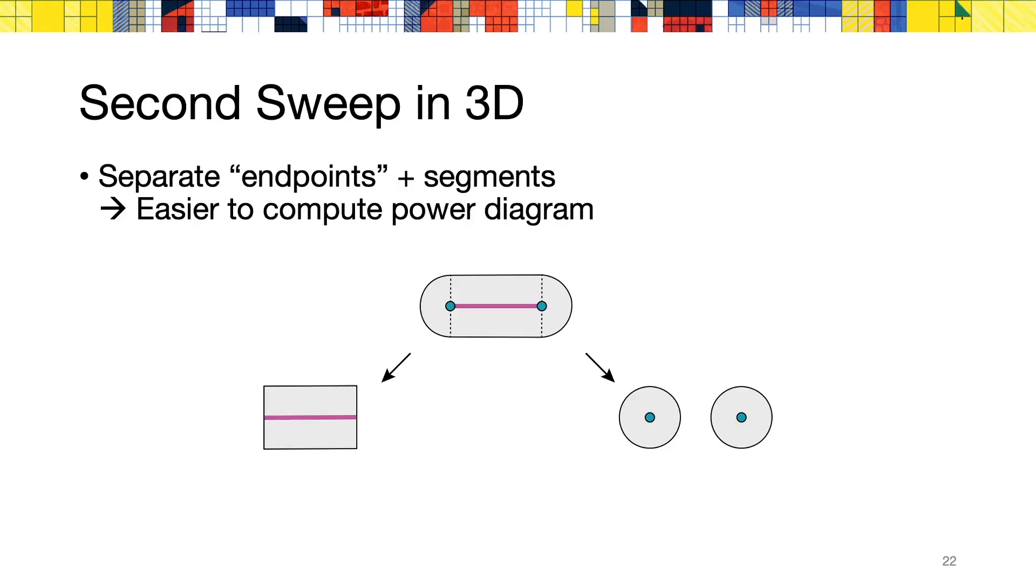However, there is an additional difficulty here. The power diagram for a set of line segments can be very complicated, with cells that are split into multiple connected regions. To keep the implementation simple, we separate the second dilation into two operations. First, the dilation of each segment endpoints using the power diagram described earlier. And second, the Minkowski sum of each segment with an orthogonal segment in the direction of the sweep.